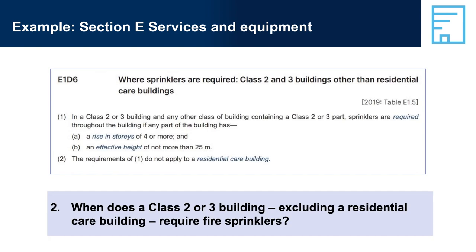Question 2: When does a Class 2 or 3 building, excluding a residential care building, require fire sprinklers? A Class 2 or 3 building, excluding a residential care building, requires fire sprinklers if any part of the building has a rise in stories of more than 4, even if the effective height is less than 25 metres. If the building has an effective height of more than 25 metres, sprinklers are also needed.